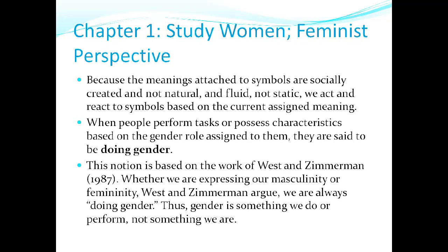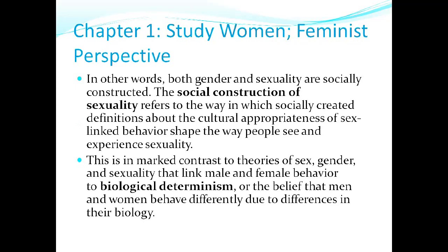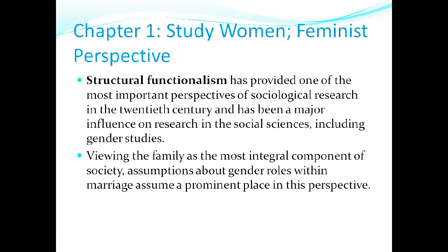People are performing their roles because this is what they're supposed to do — doing gender, not based on who they really are. Both gender and sexuality are socially constructed, not natural. The social construction of sexuality refers to the ways in which sex-linked behaviors shape how people see and experience sexuality. This is in marked contrast to theories that link male and female behavior to biological determinism — the belief that men and women behave differently due to differences in their biology.